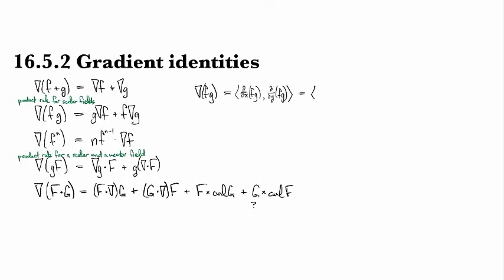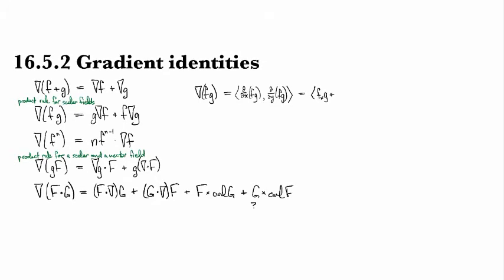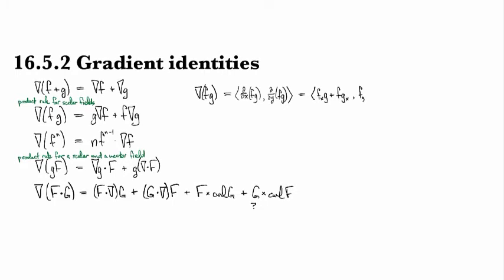So let's see. Now I have it reduced to the situation where I can do product rule in each coordinate. So this is going to be f prime g plus f g prime, but instead of prime I'm doing d/dx. And then in the other one it's going to be derivative of f times g plus f times derivative of g.